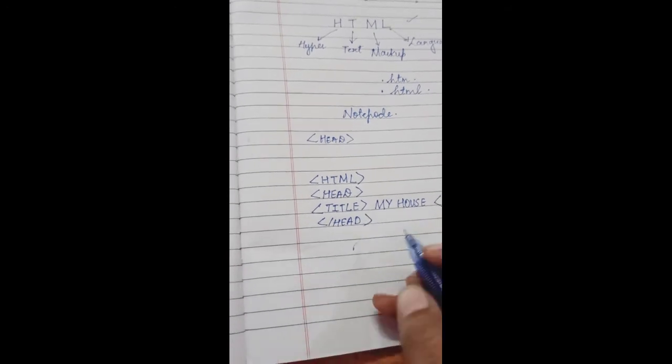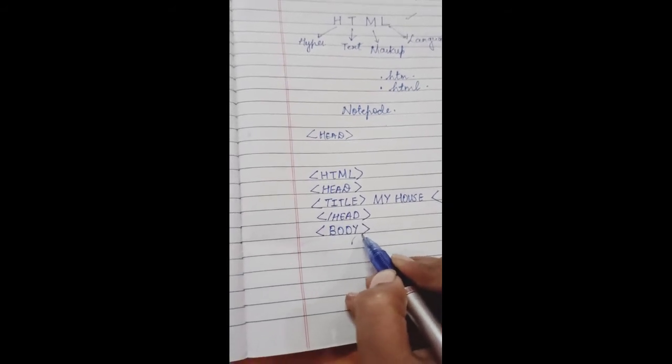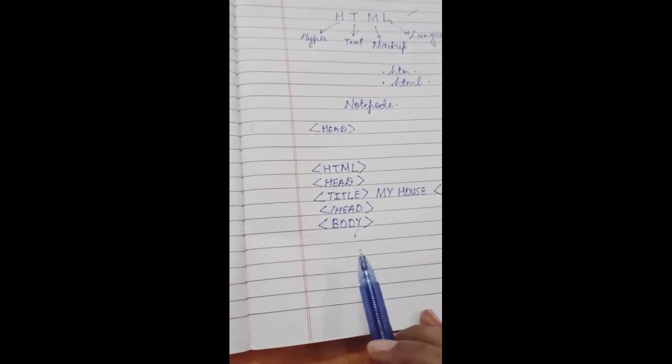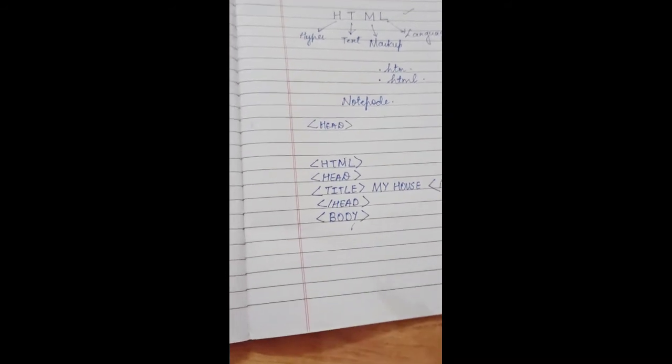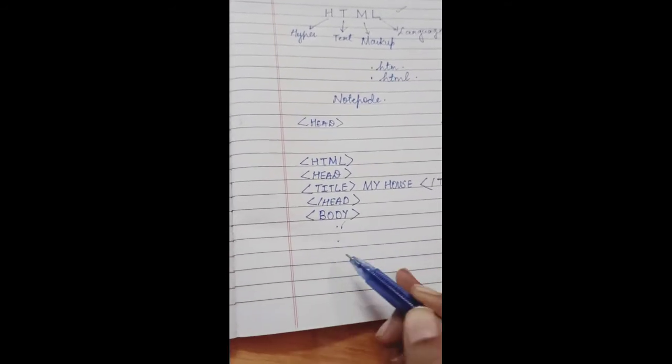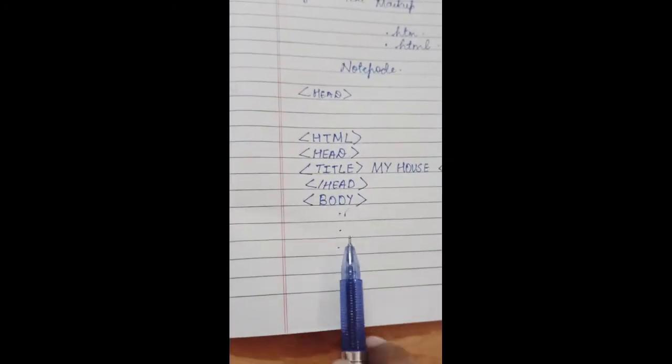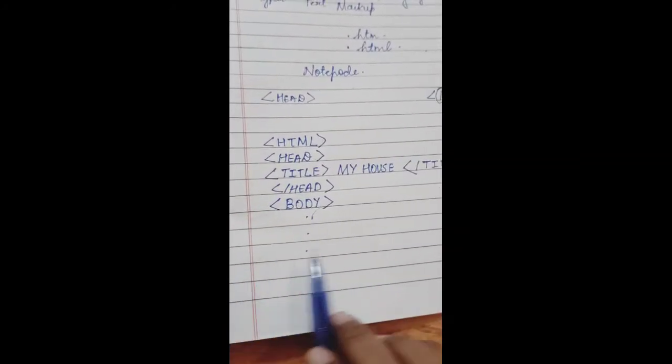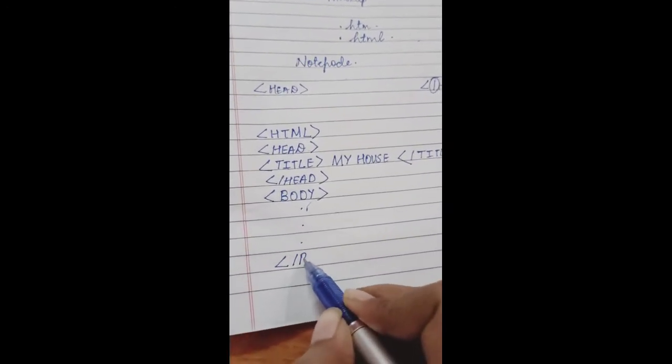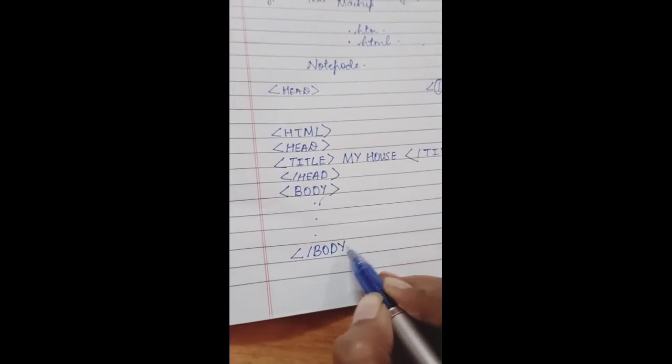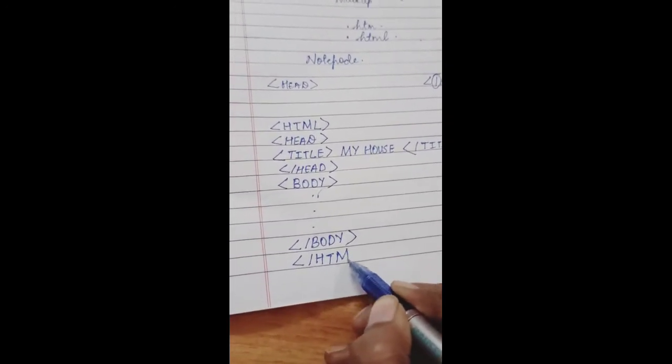And then open body tag. In this body tag, it contains all the contents of the web page. This body tag contains all the text, all the information which you want to display on your web page. After giving all the content, we close the body tag and then we close the HTML tag.